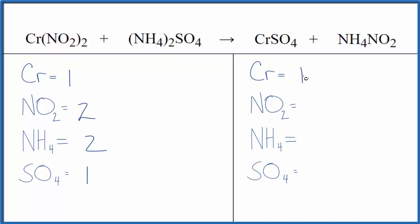On the product side, one chromium, one nitrite ion, one ammonium ion, and one sulfate ion. So a lot clearer, a lot easier to work with. You'll get the same answer either way though.